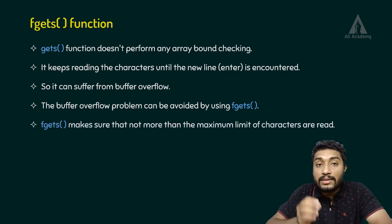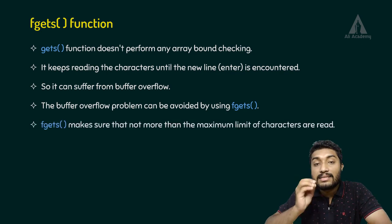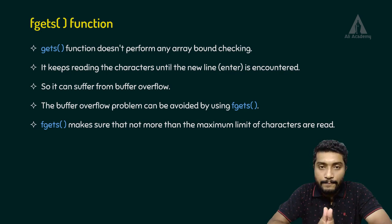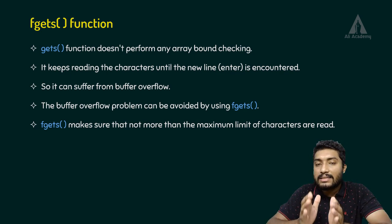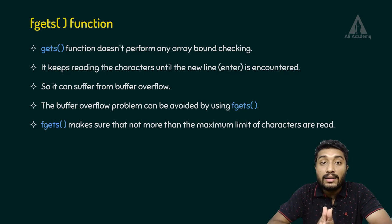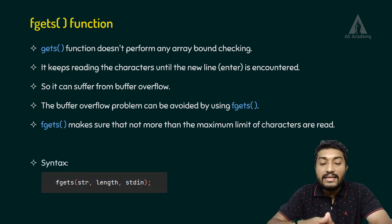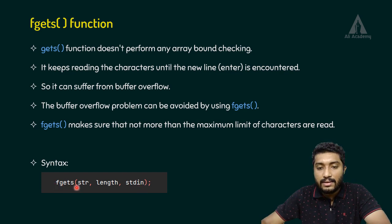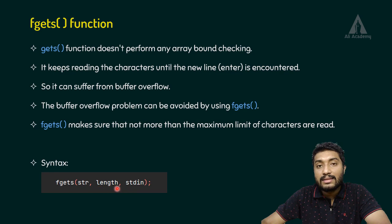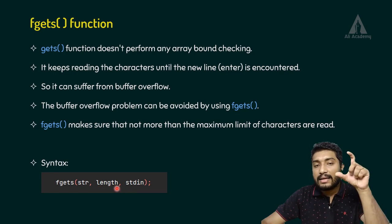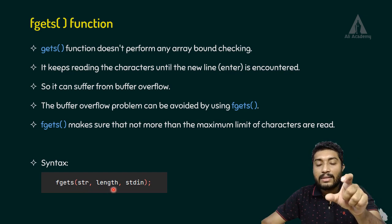fgets makes sure that not more than the maximum limit of characters are read. If we have a maximum number of characters defined, fgets will only read up to that limit and store the result in the variable. In the syntax of fgets, you pass the variable, the maximum number of characters to read, and the stream to read from.